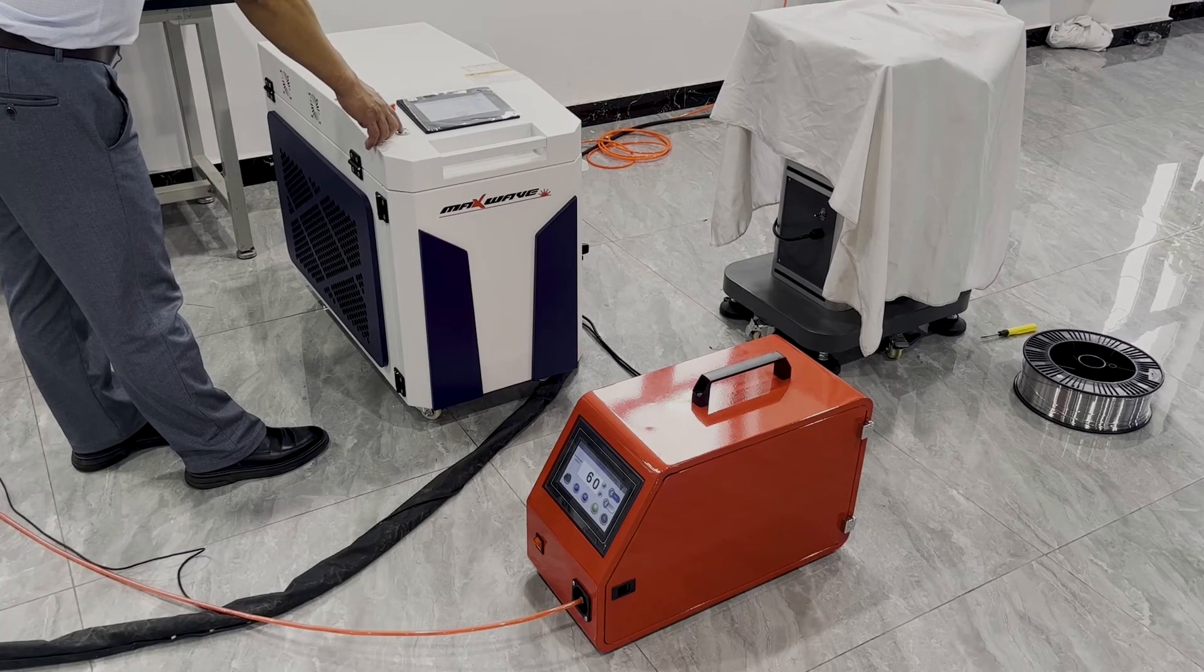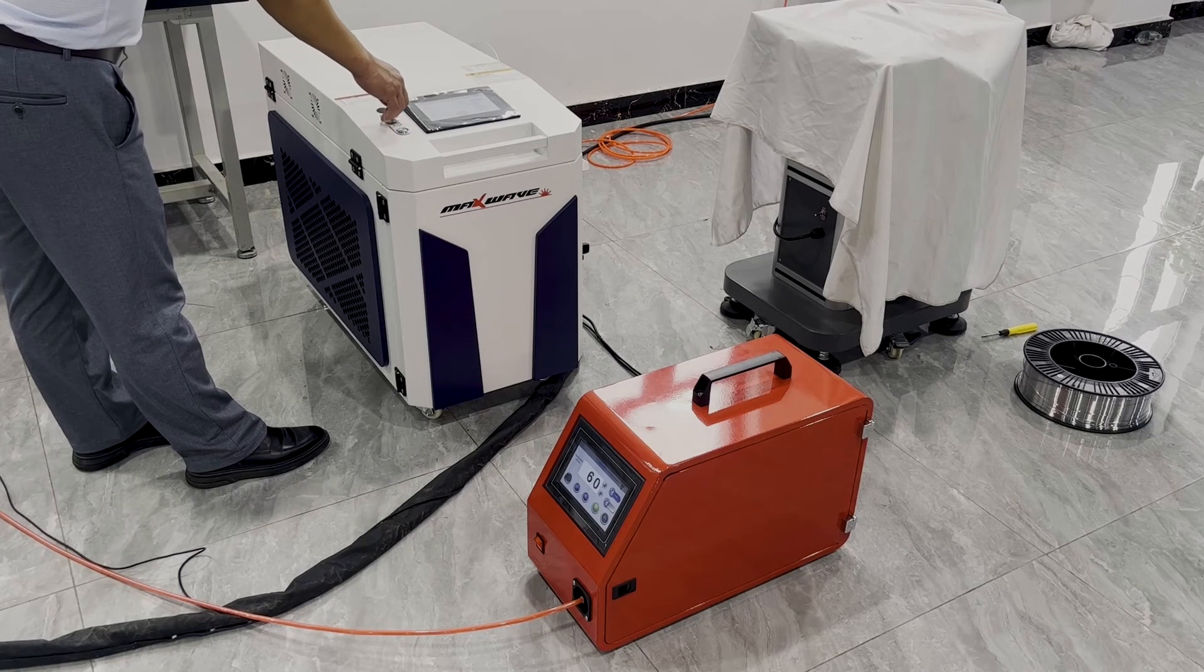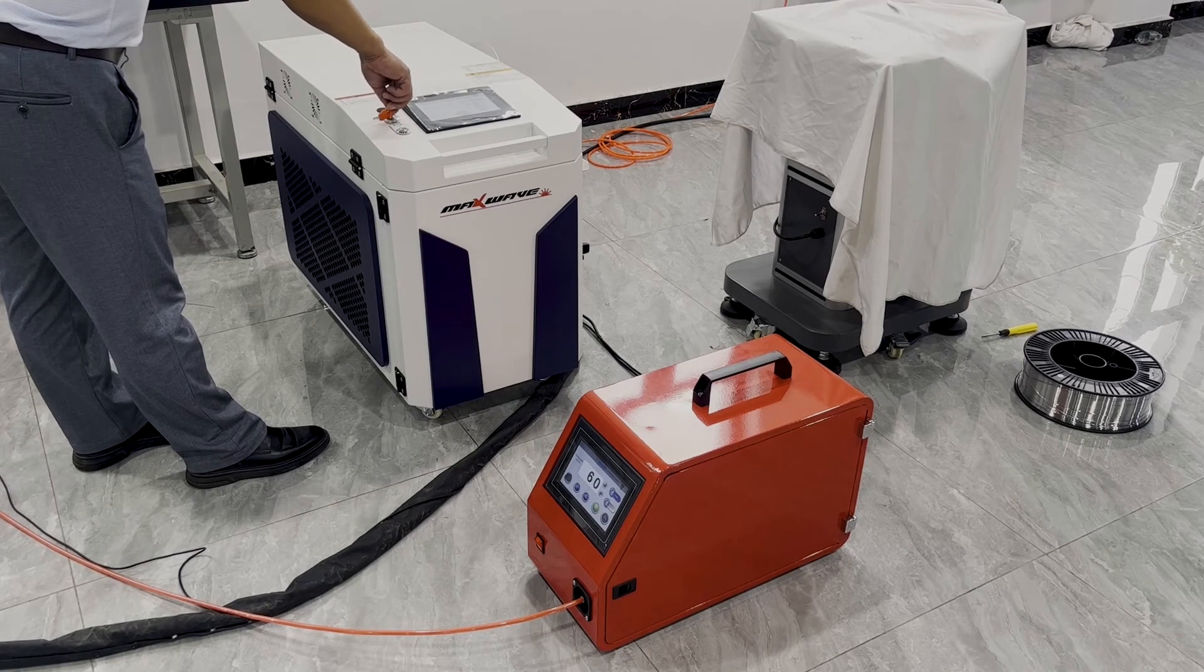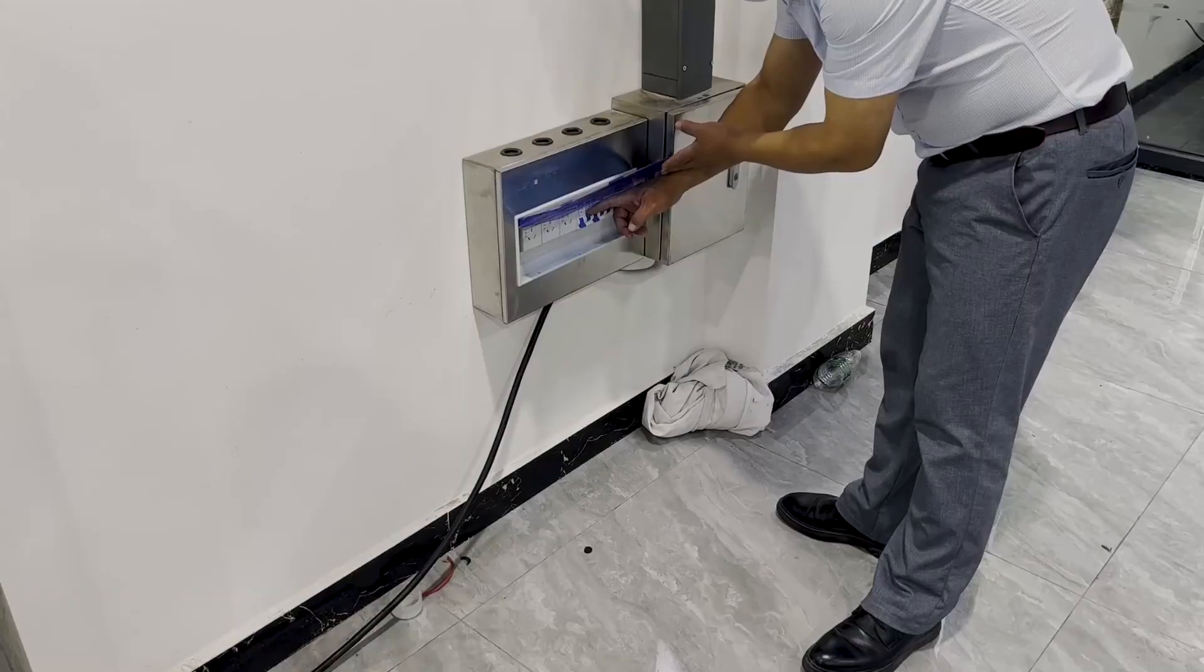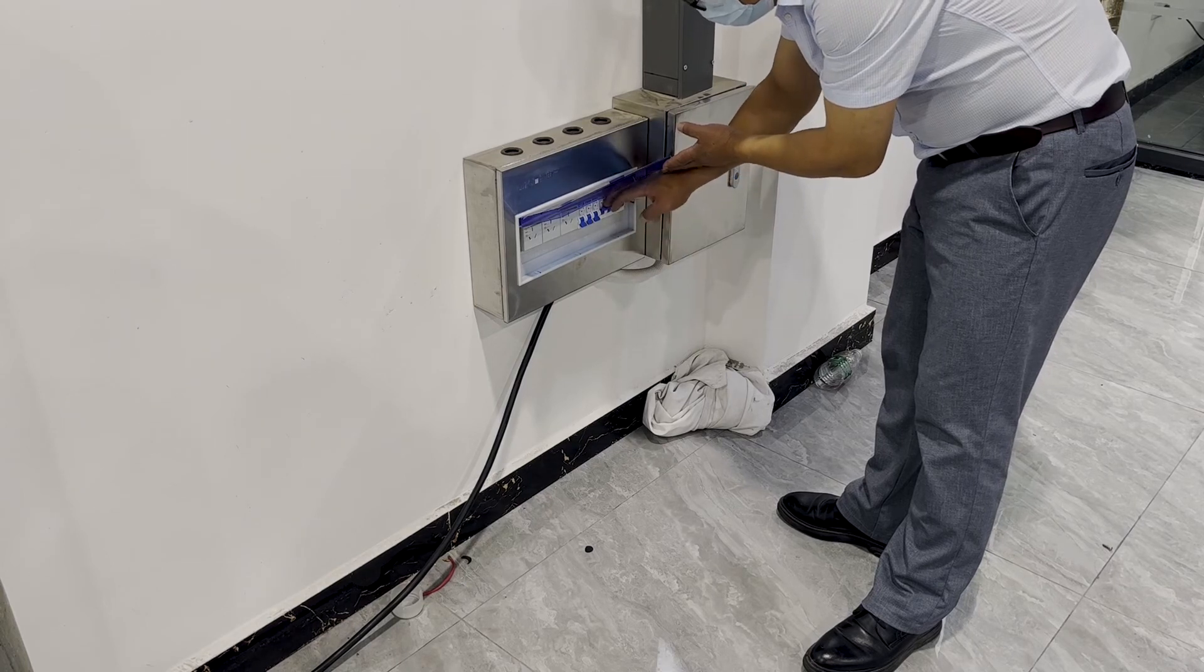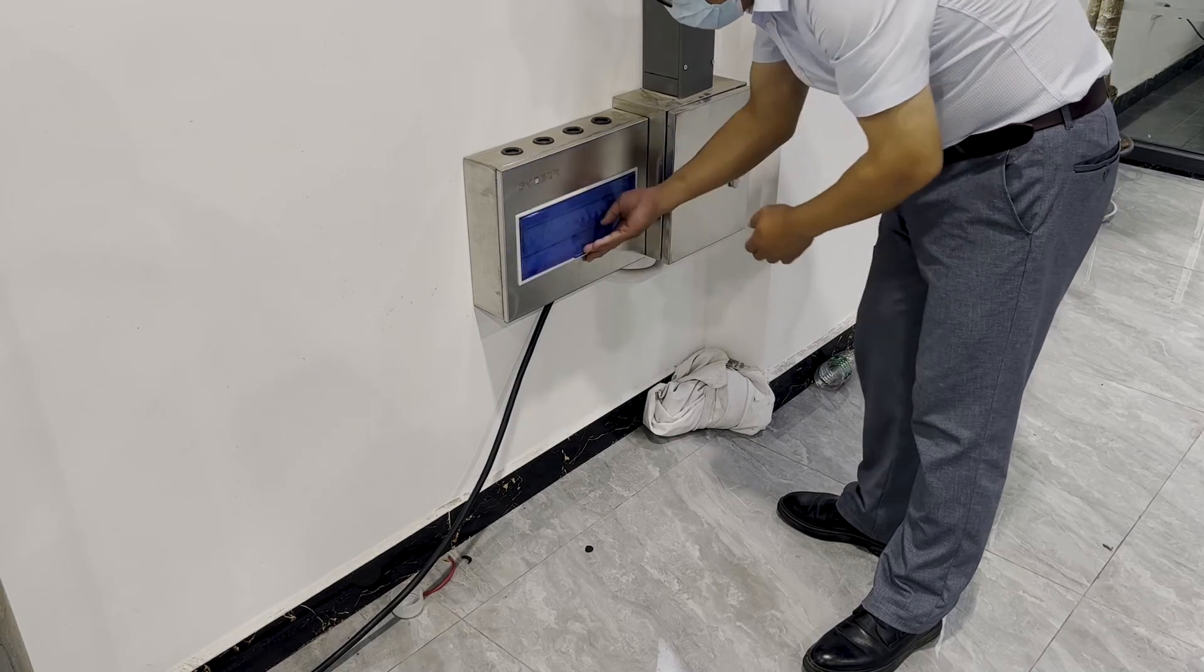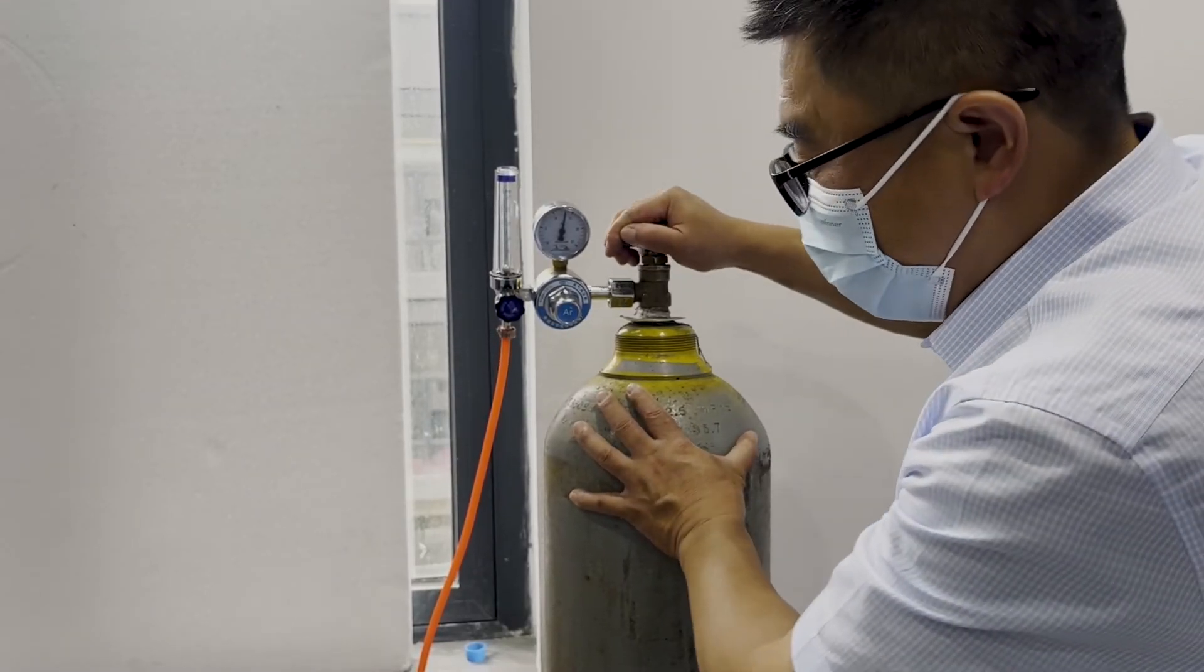Press the start button. Turn the key switch. Turn off the air switch. Turn off the argon gas.